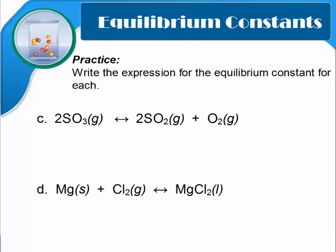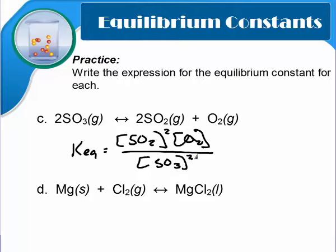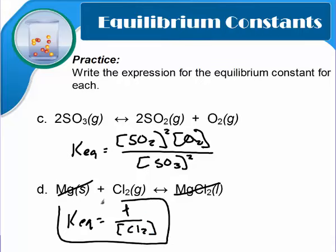You're going to pause the video and try C and D on your own. Restart when you have the answer. So for C, you should have got SO2 squared times oxygen over SO3 squared. And for the bottom one, you should have eliminated magnesium and magnesium chloride, so 1 over chlorine. In this case, you should have left the 1 because otherwise the chlorine will not be on the bottom, and we need it on the bottom of the expression.